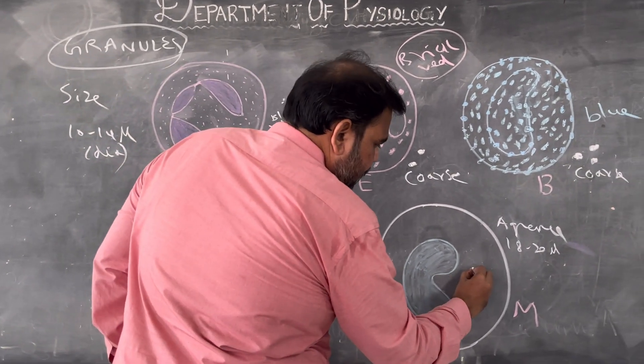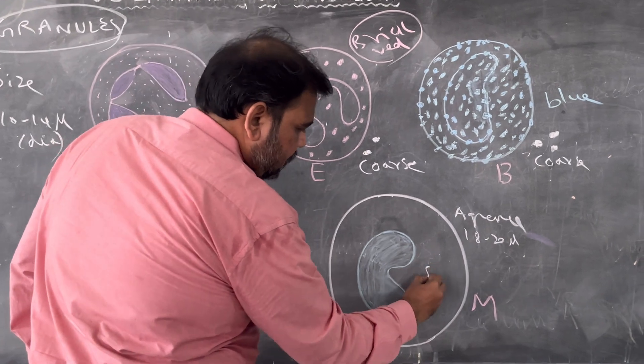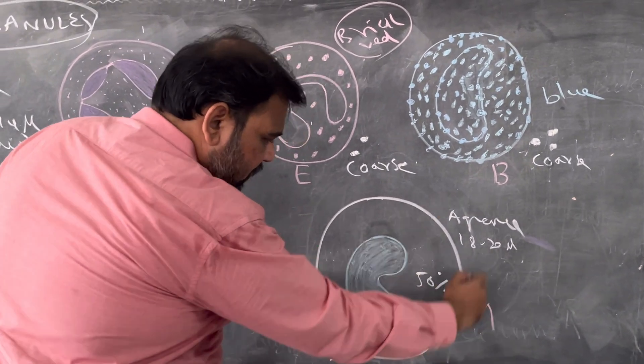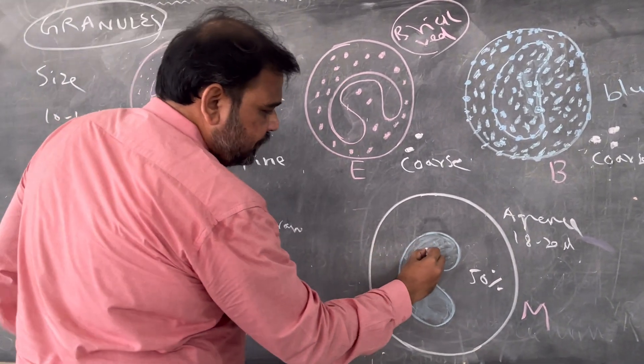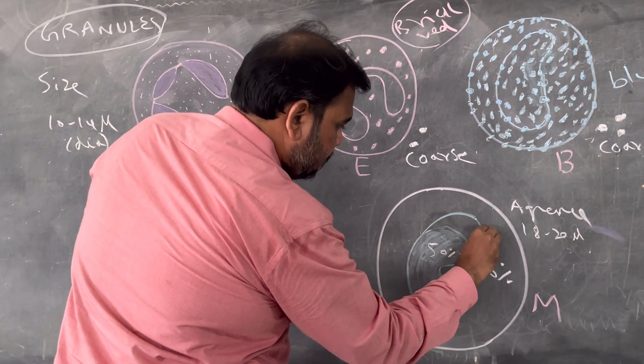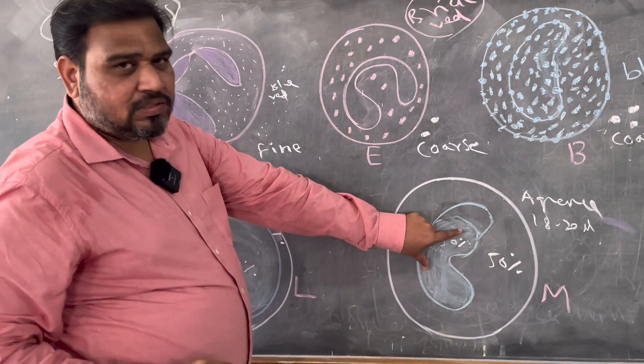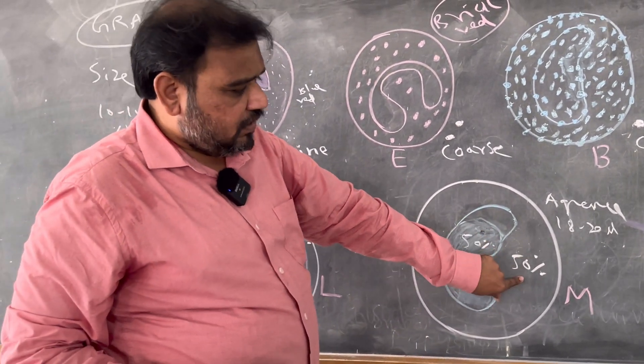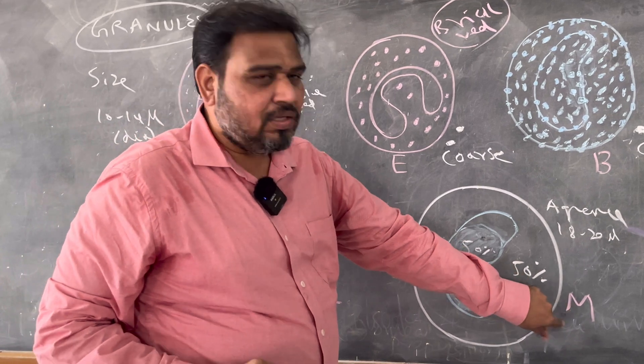Here you see, 50 percentage will be cytoplasm, 50 percentage will be nucleus. So 50 percentage is nucleus, 50 percentage is cytoplasm, that is monocyte.